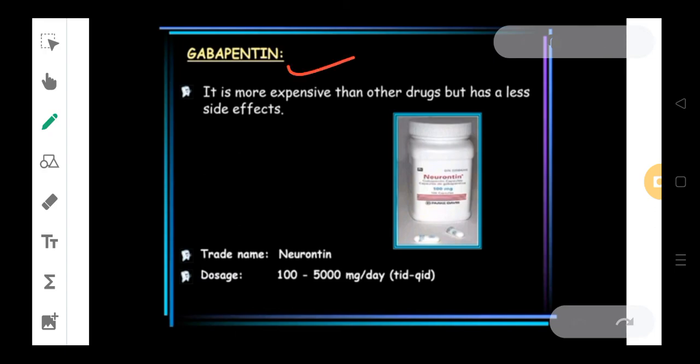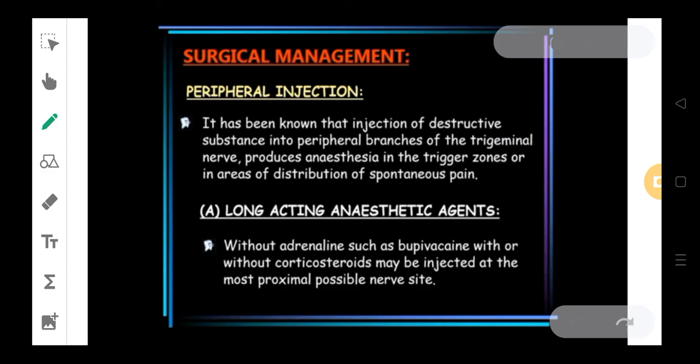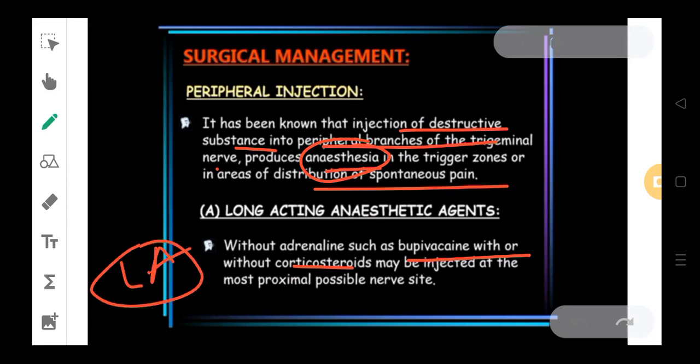Moving ahead, we have gabapentin. Then, we move ahead to baclofen. Now, we come to surgical management. Peripheral injections are one of the surgical management which could be done. It is defined as injection of destructive substance into peripheral branches of trigeminal nerve. It produces anesthetic effect in the trigger zones and distribution of the spontaneous pain. When we give injections into the peripheral branches of the trigeminal nerve, it produces an anesthetic effect due to which the pain is actually relieved. Agents such as bupivacaine with or without corticosteroids could be given to the patient. It is a local anesthetic. It is going to give an anesthetic effect to the patient.